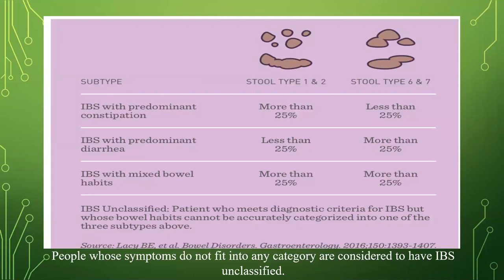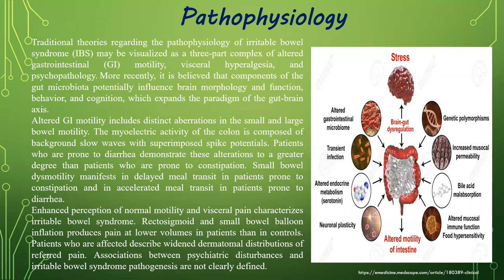There are subtypes of this disorder depending on predominant constipation, diarrhea, or mixed bowel habits. People whose symptoms do not fit into any category are considered to have irritable bowel syndrome unclassified. Traditional theories regarding the pathophysiology of IBS may be visualized as a three-part complex of altered gastrointestinal motility, visceral hyperalgesia, and psychopathology.